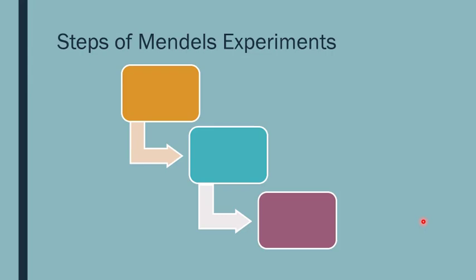How did Mendel carry out his experiments? He carried out his experiments in three steps — this part is asked for two or three marks. First, he selected pure breeds as parents. He planted tall plants; if even one or two were dwarf, he discarded them. He grew them for a second generation, removed any dwarf plants again, and repeated for a third generation until all were tall. He did this for all 14 varieties.